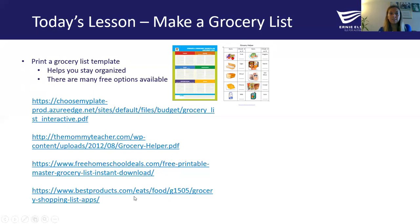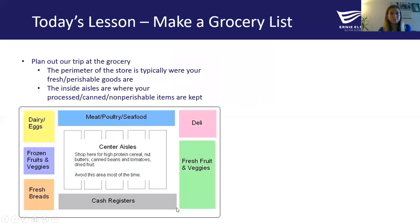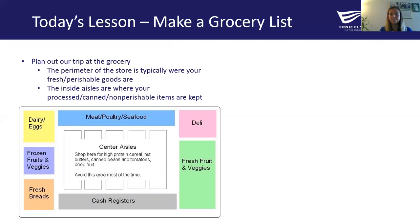We also have a list of apps that you can download — about 10 or 11 different apps either for iPhone or Android, most of which are free. When you're making your grocery list, you want to plan out your trip by visualizing what the store looks like and how you want to maneuver through it. Typically you want to be going through the perimeter or the outside of the store.